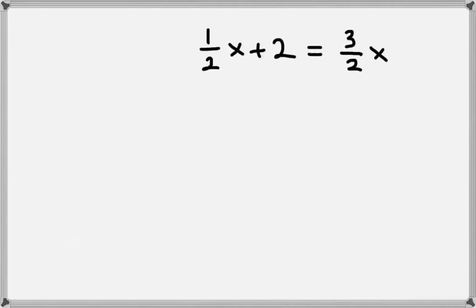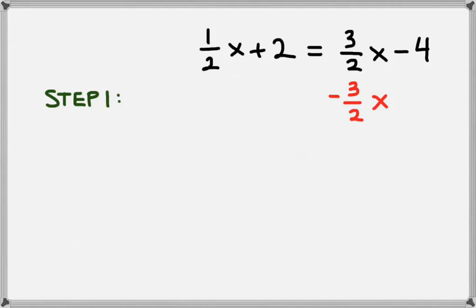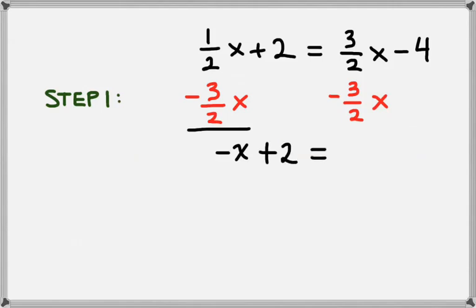Let's look at another one. Here we have 1 half x plus 2 equals 3 halves x minus 4. The first thing we're going to do is combine the x terms. So this time, what we'll do is subtract 3 halves x from the right hand side, and then since we did that to the right hand side, we need to subtract 3 halves x from the left hand side as well. That leaves us with 1 half minus 3 halves times x, which is negative 1 times x, or negative x, and we still have that plus 2. On the right hand side, the 3 halves x and the negative 3 halves x cancel, so we're just left with negative 4.